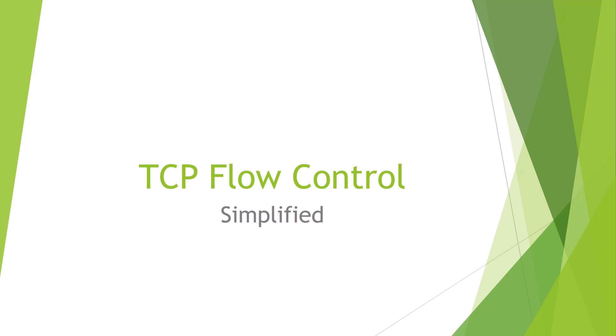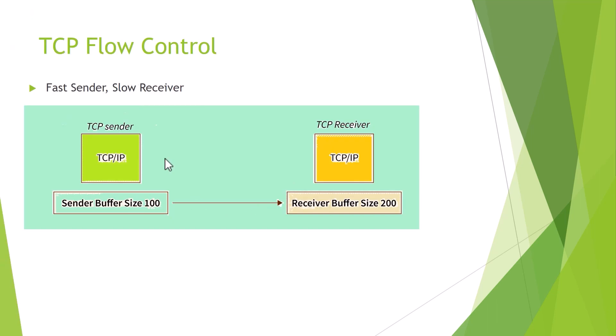In cases of a fast sender and a slow receiver, we definitely need this flow control. In an ideal world when both parties are well-matched — sender sends data, gets ACK, sends data, gets ACK — there is no problem. The problem starts when one sender is fast and the receiver is slow, so we need this flow control concept.